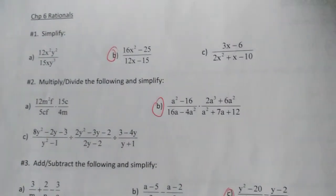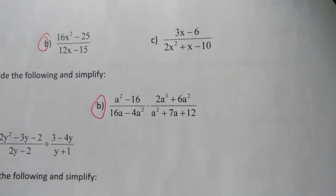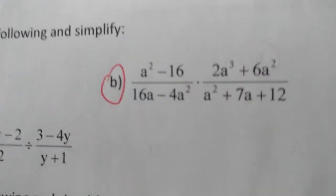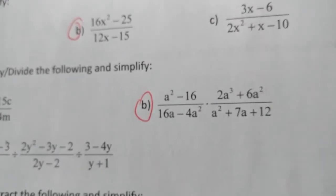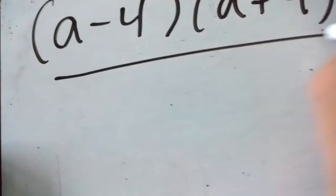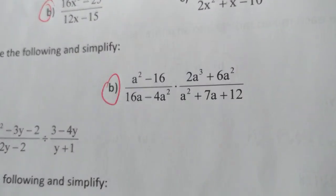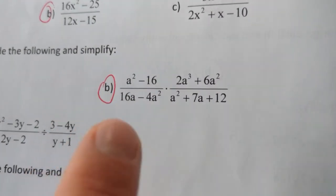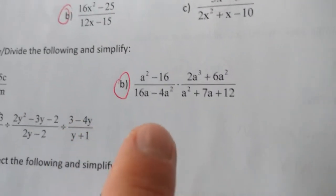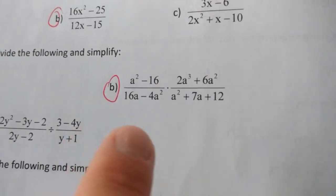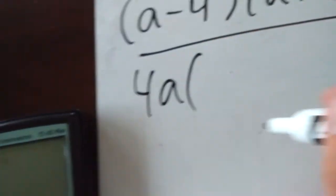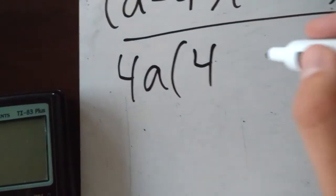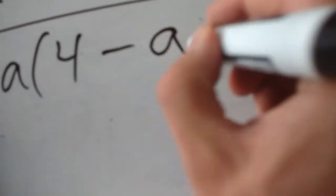We're going to do question 2, part B — I chose this one because there's quite a lot going on with it. We'll start by factoring the fraction on the left. The numerator a squared minus 16 is a difference of squares, so we factor it as (a minus 4)(a plus 4). As for the denominator, 16a minus 4a squared looks like a difference of squares, but you can't take the square root of 16a. The best we can do is factor out a 4a from both terms, giving 4a(4 minus a).